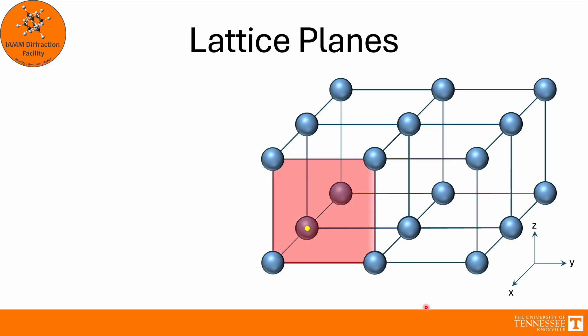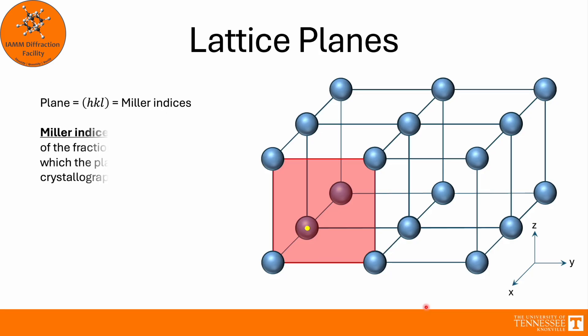And let's look at this plane of atoms. When identifying planes, we use (hkl) in parentheses, and these are called Miller indices. Miller indices are the reciprocals of the fractional intercepts which the plane makes with the crystallographic axes. When identifying Miller indices, it's important to remember that h corresponds to the x-axis, k to the y-axis, and l to the z-axis.